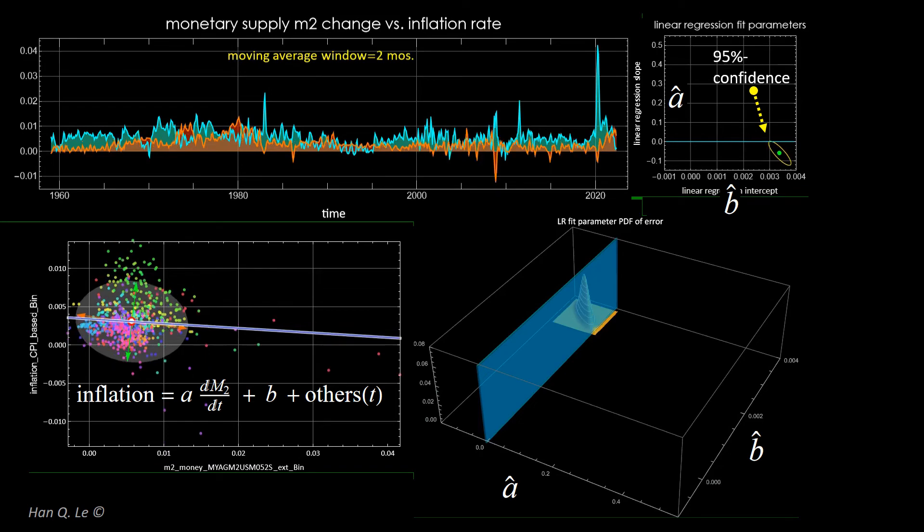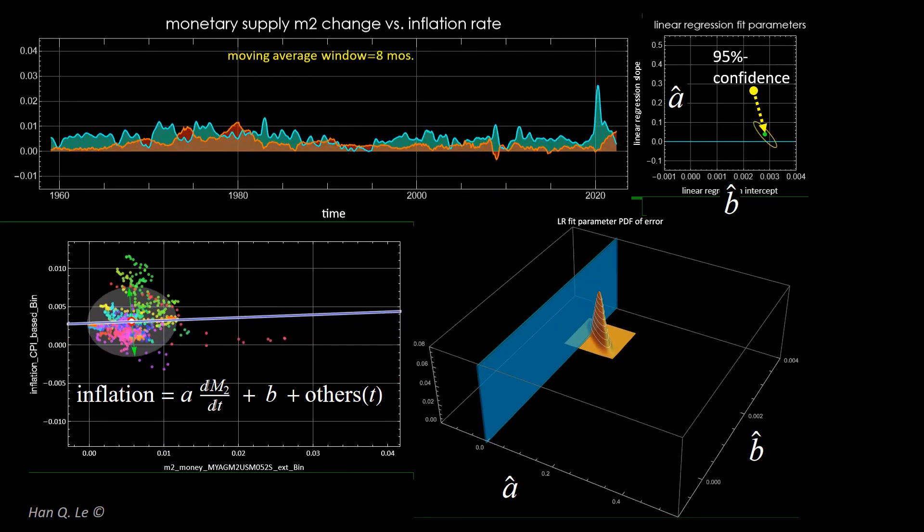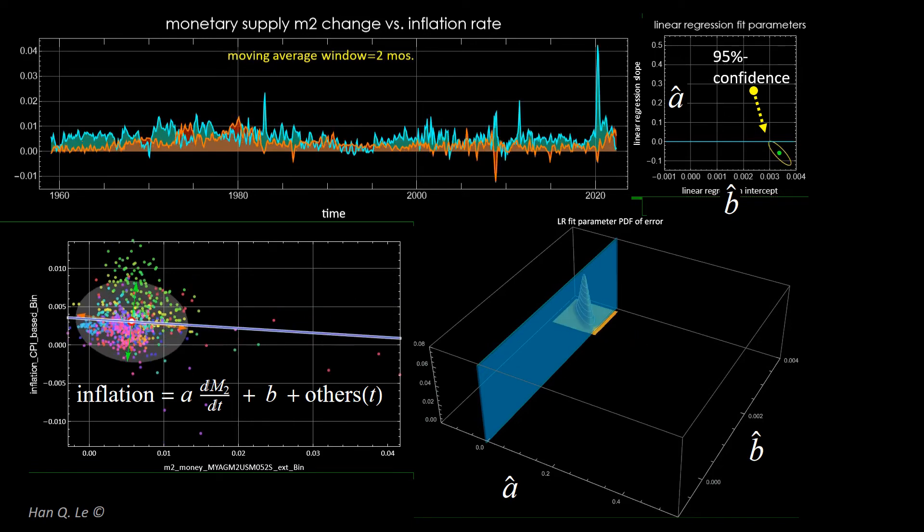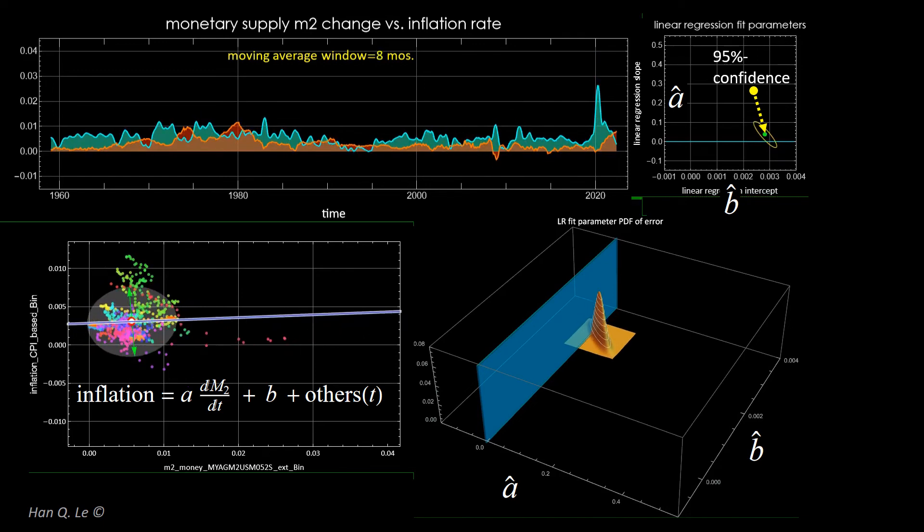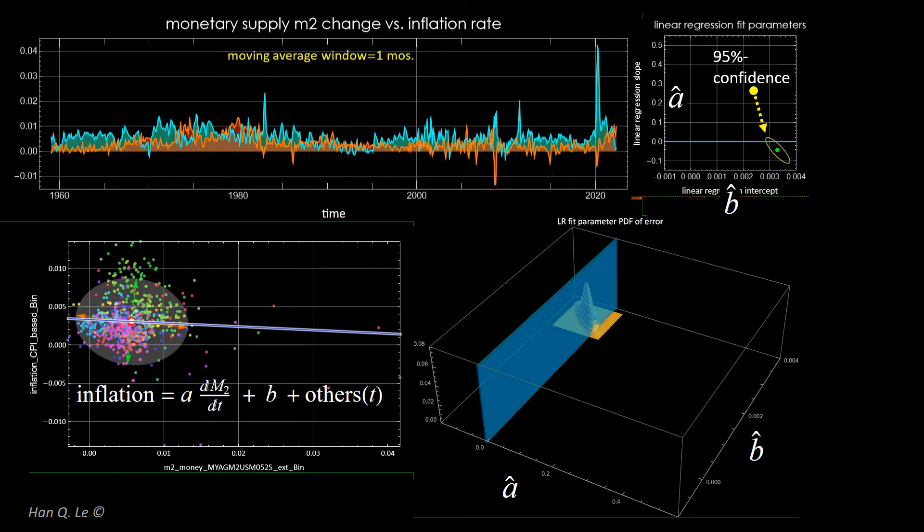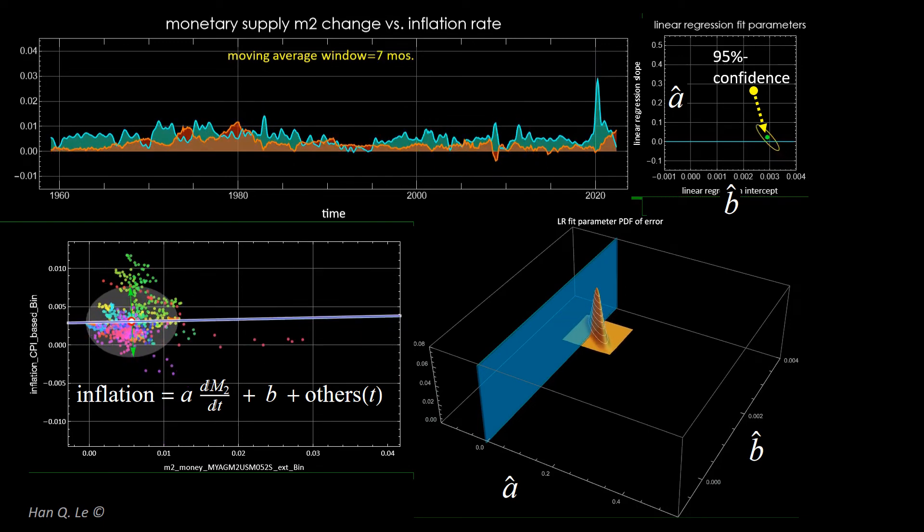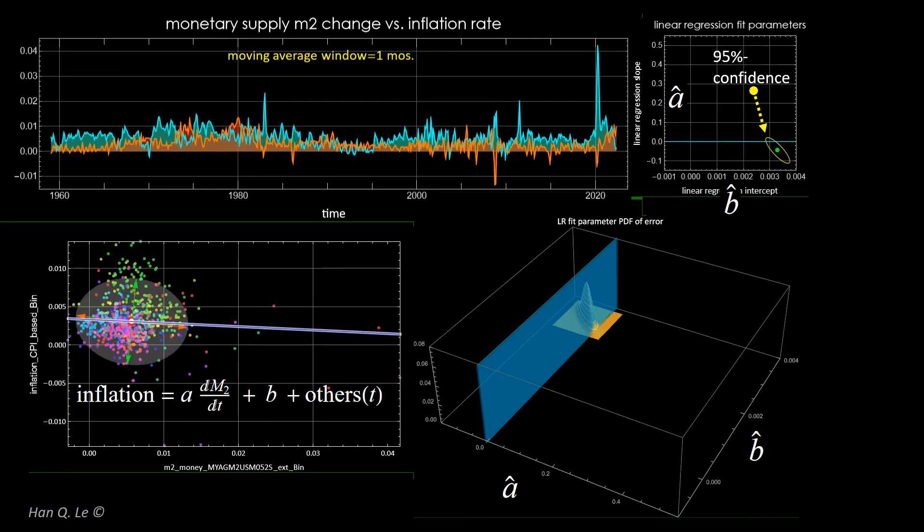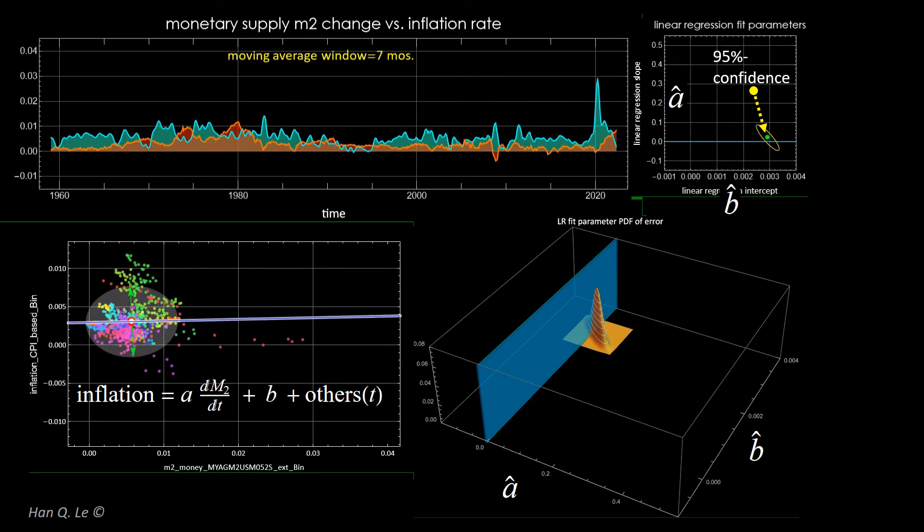Now, moving average data smoothing is applied, starting from 2 month window to 12 months. Observe the data change and the related statistical calculations. As the data are smoothed the scatter plot covariance ellipsoid is smaller. The linear slope, although still not statistically significant, starts to tilt toward positive, which is more consistent with the expectation that an increase of M2 should bring higher, not lower inflation. This data smoothing step is to prepare for the next step, which is time response.